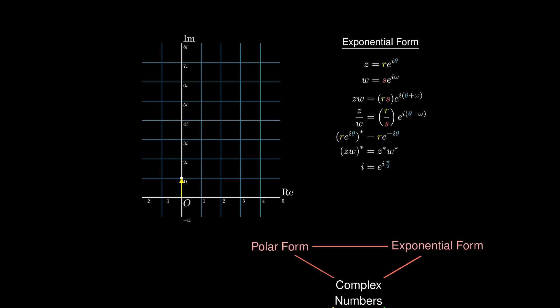If we rotate a second time, we are essentially multiplying i twice, giving i² = e^(iπ). Furthermore, by our definition of i, i² = -1. This simplifies to e^(iπ) + 1 = 0, which is the famous Euler's identity — arguably one of the most famous formulae in mathematics.